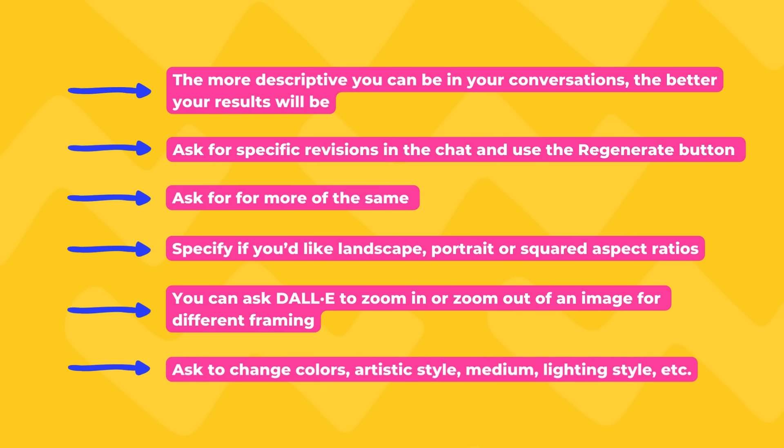For our members, I'll add framing keywords to the Canva document. Finally, tip six: you can ask DALL-E to modify your photo — change colors, change the artistic style, change the medium (from watercolor to hyper-realistic or vectorized graphic), or change the lighting style. Changing any of these variables will result in a different image.